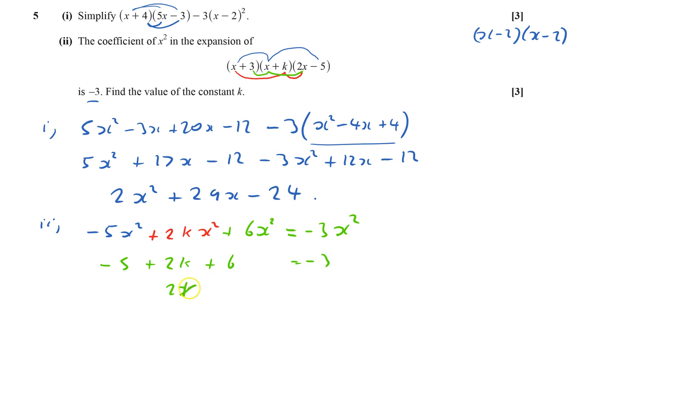So 2k, that's plus 1 on this side. So take away 1 from that side, I'll get minus 4. So k equals minus 2. I have found the value of k. So k is minus 2, and that's question 5 done.